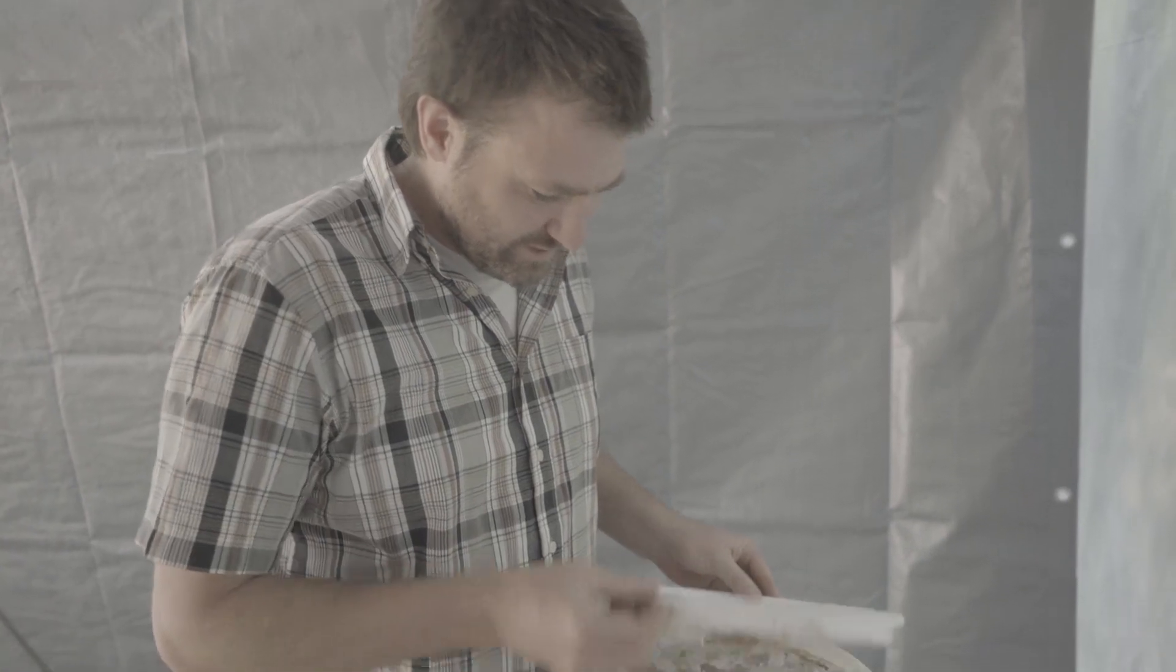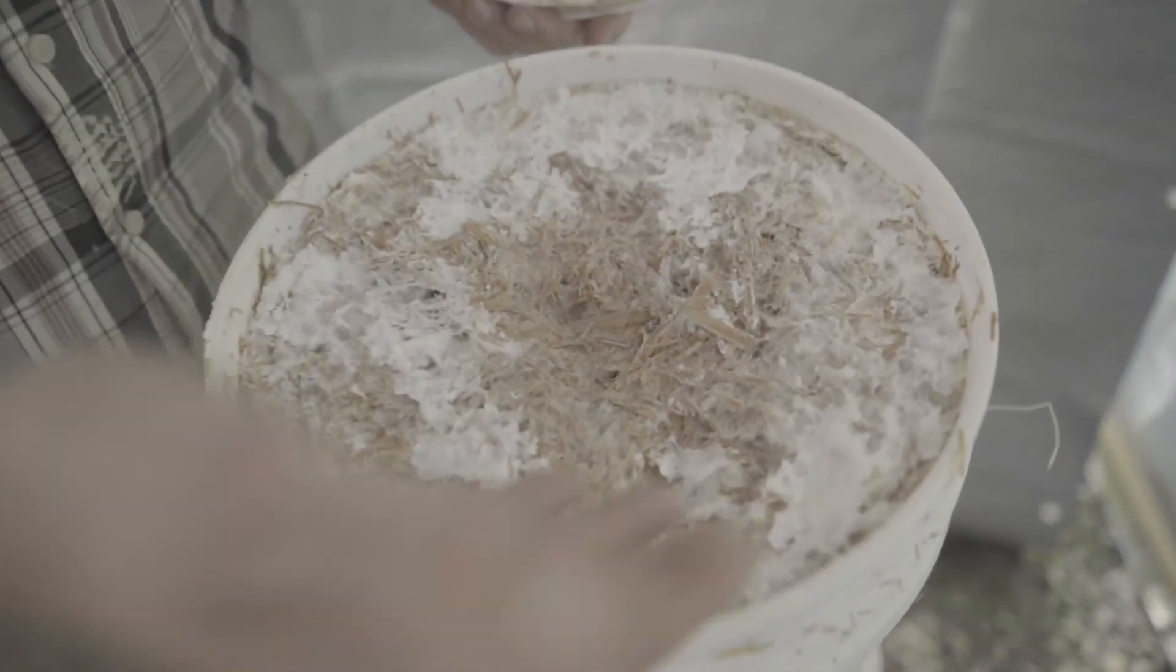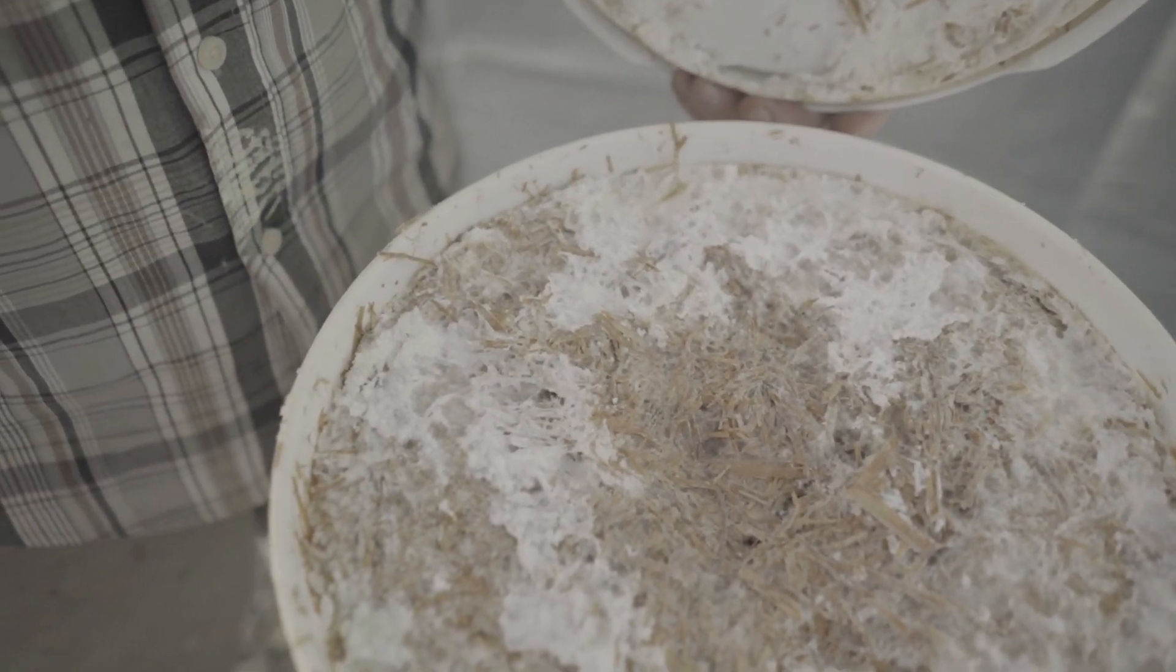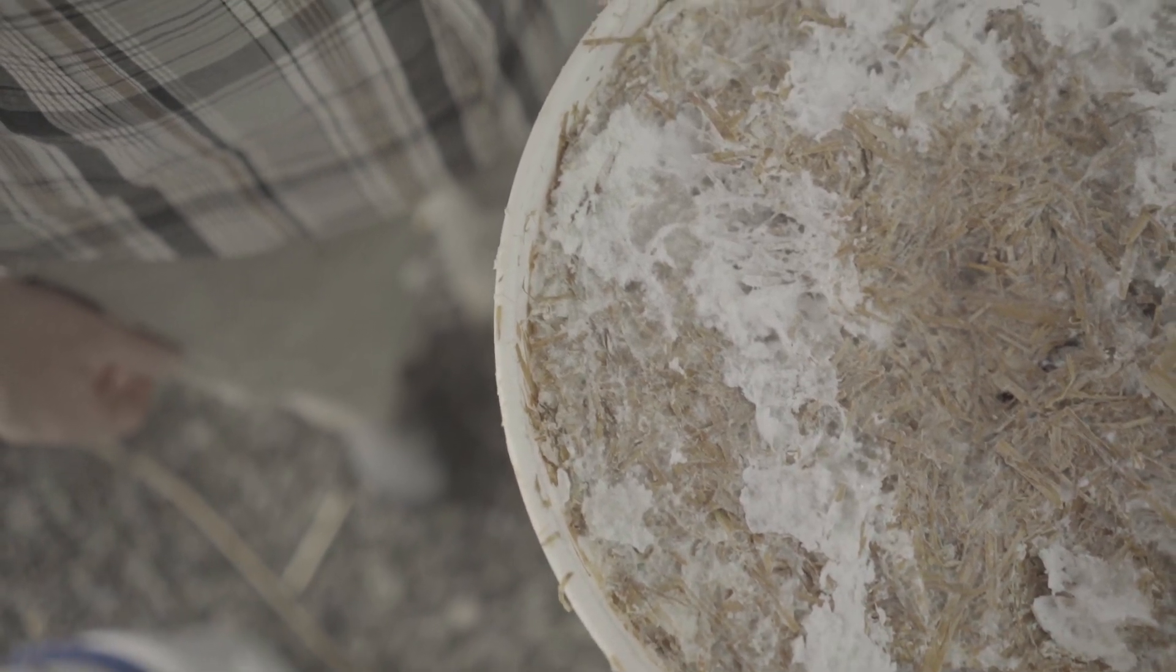Let's look at some buckets that are ready to fruit. If we take off this lid here, we can see really good mycelial growth in here. It's eaten all the straw. There's no green mold or any kind of contamination, so that's great.